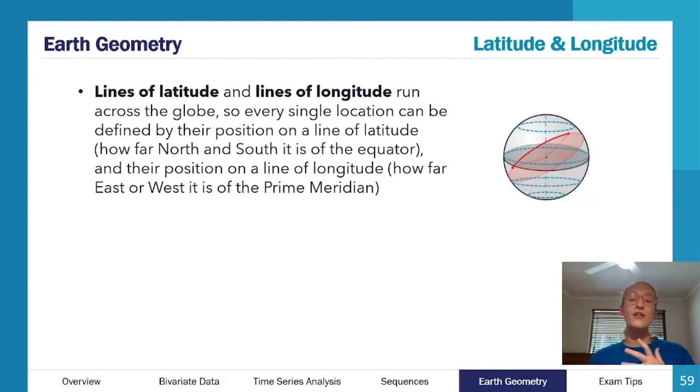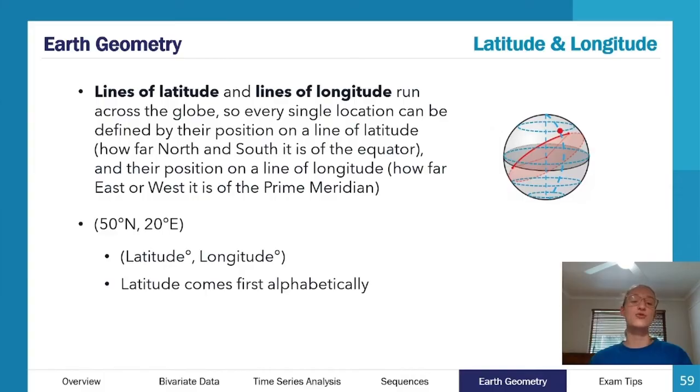So for every point on the earth, it can be defined by where it is in terms of latitude and longitude, like that diagram shows there. And latitude always comes first, so how far north or south it is, and then we write longitude, so how far east or west is. How I remember that is latitude comes first alphabetically, so we put it first in the coordinate order. So it's how far north or south, and then how far east or west.